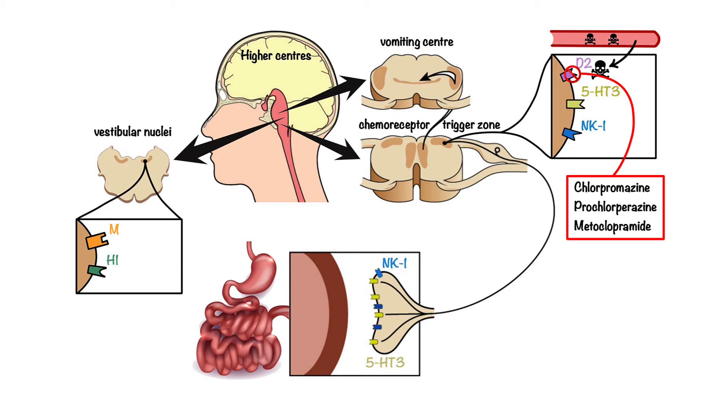Next, we have enterochromaffin cells of the gastrointestinal tract that can also be stimulated by ingested irritants or toxins, which in turn cause them to release neurotransmitters serotonin and substance P that bind to their respective receptors to send the signal to the chemoreceptor trigger zone.